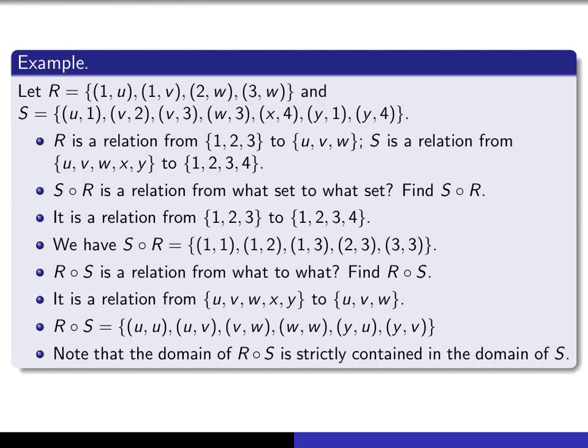Notice, by the way, that the domain of S composed with R is strictly contained in the domain of S. The domain of S composed with R is {u,v,w,y}, whereas the domain of S is {u,v,w,x,y}. It's got that x in it, which S composed with R doesn't have. So, relations aren't exactly like functions in that way. If you have a relation on a set A cross B, the actual domain can be a proper subset of A. It doesn't have to be all of A.